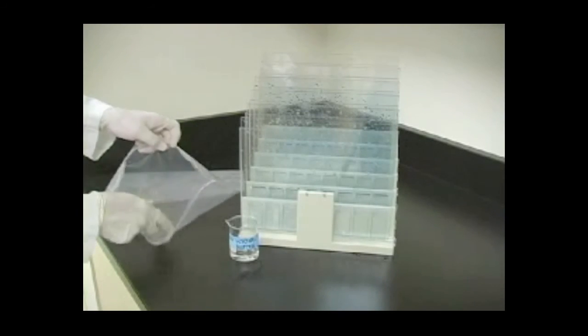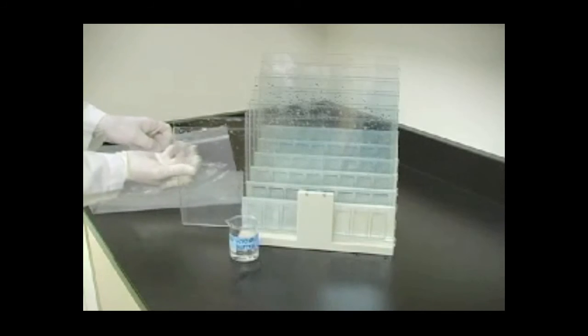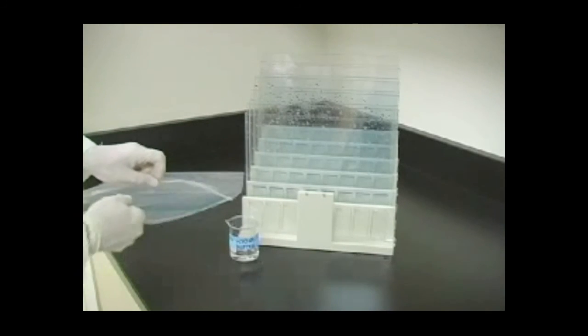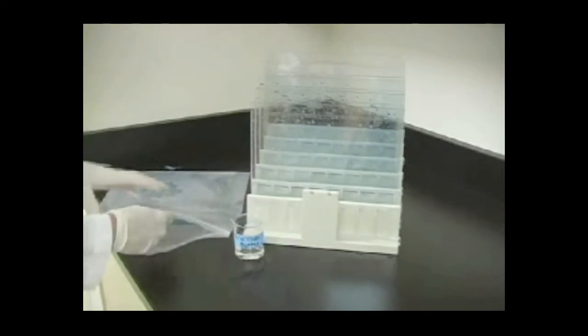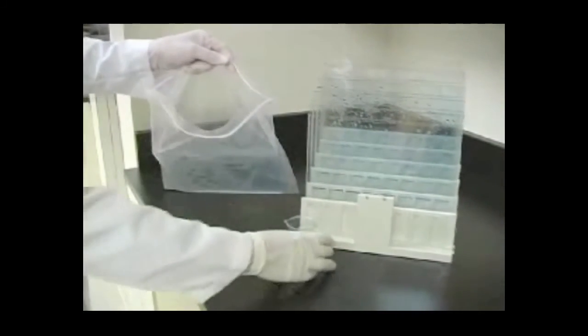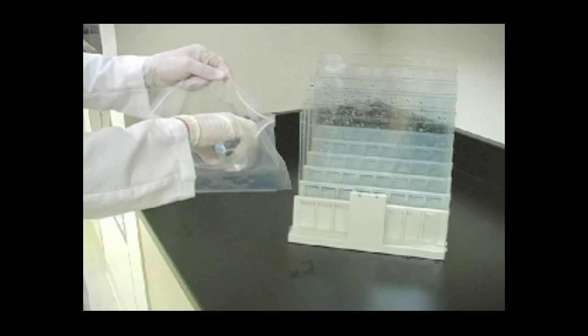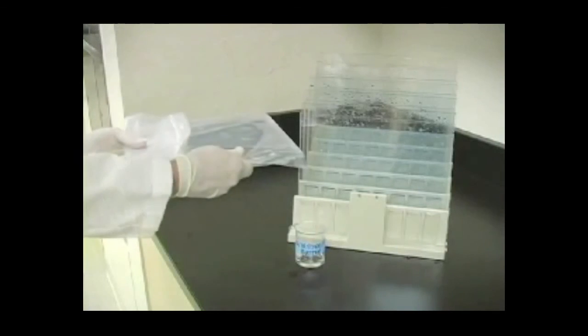The gels are now ready to use. To store, place the gel cassette in a tightly sealed container or Ziploc bag. Add a few milliliters of 1X gel buffer to the bottom of the container and to the tops of the gels to prevent them from drying out. Store tightly sealed at 4 degrees Celsius.